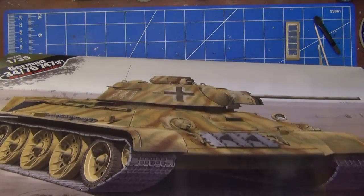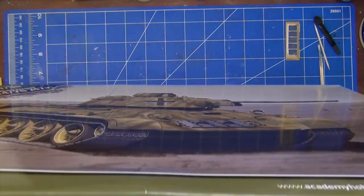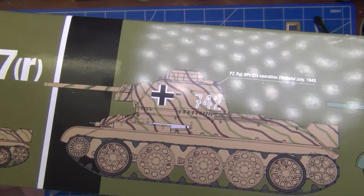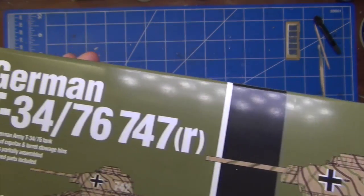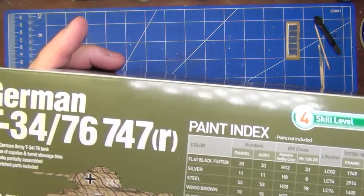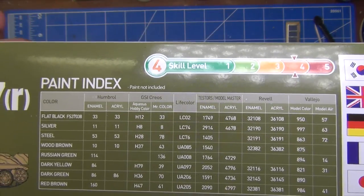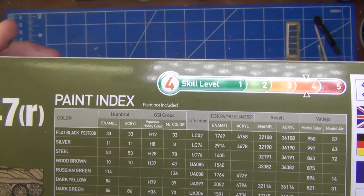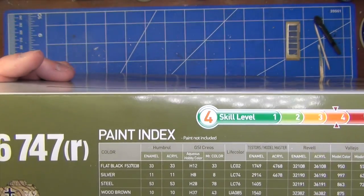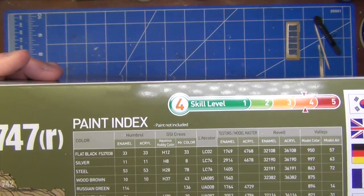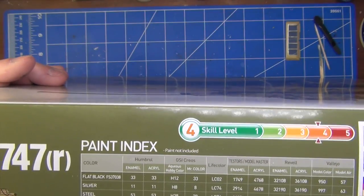Nice box art, you can see on the side here it's got some illustrations of some different variants that you can do. So that one there you can see is the one I'm going to do. One feature on this kit which I was kind of pleased with is it includes a paint index which shows you some of the common colours and the matching colours. I thought that was a really nice feature. It also has a skill level which is up towards 4 which I'm guessing means it's more advanced although so far, touch wood, it's been pretty straightforward.